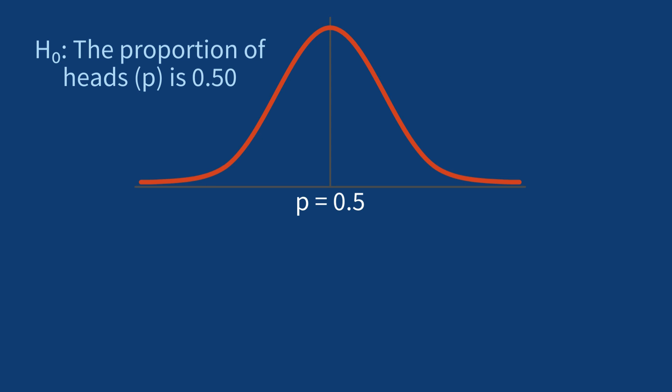However, even with a fair coin, some sets of flips will deviate from this perfect 50-50 split due to random chance. This distribution is the sampling distribution of the sample proportion under the null hypothesis.